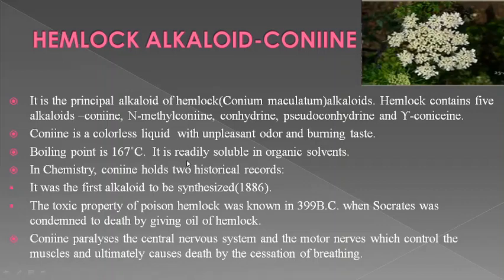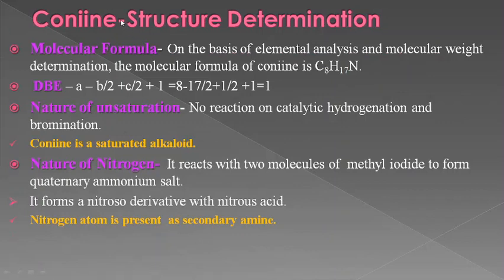In chemistry, conine holds two historical records. First, it was the first alkaloid to be synthesized, in the year 1886. Secondly, the toxic property of poison hemlock — known as oil of hemlock — was known in 399 BC when Socrates was condemned to death by being given oil of hemlock. At that time, this oil was an official poison given to prisoners. Conine paralyzes the central nervous system and motor nerves, which control the muscles, and ultimately causes death by the cessation of breathing.